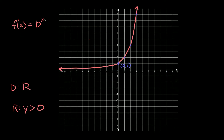Next we have f of x is equal to b raised to the x, known as the exponential parent function. The graph gets very close to the x-axis but never actually touches it, runs through the point zero comma one, and then keeps increasing faster and faster. The domain is all real numbers and the range is y is greater than zero — strictly greater than zero because the graph never actually touches the x-axis.